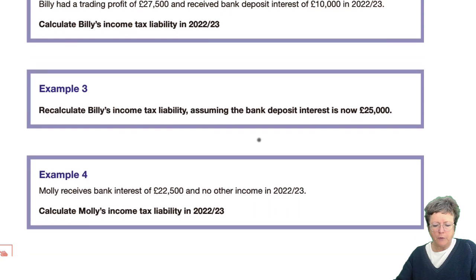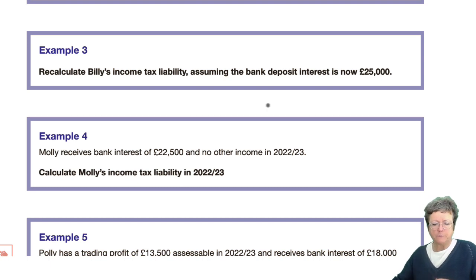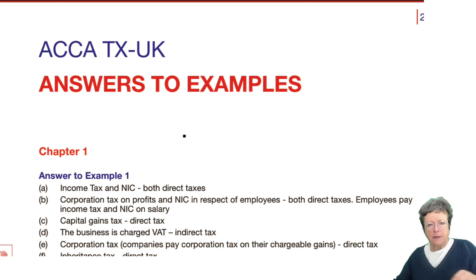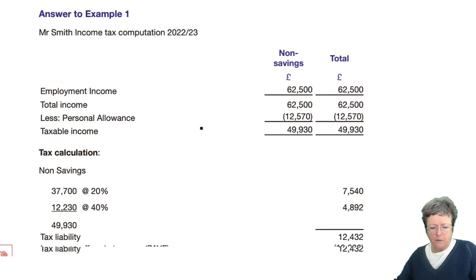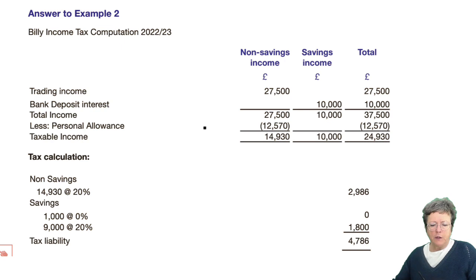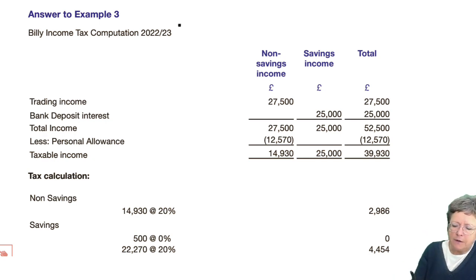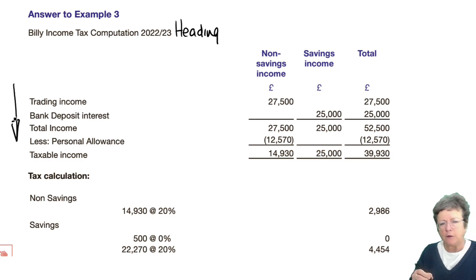Let's do example number three. We have to calculate Billy's income tax liability, assuming the bank interest is actually £25,000 and not £10,000 as it was in the first question. At the back of your notes you will find the answers for example number two. Now if we look at example number three — again, we have a heading, labels across the top, and the pro forma down the side, all nice, neat and well laid out.